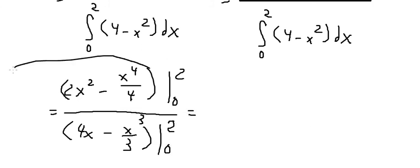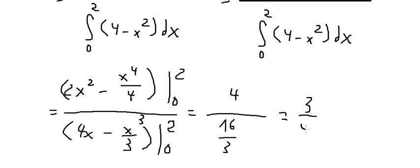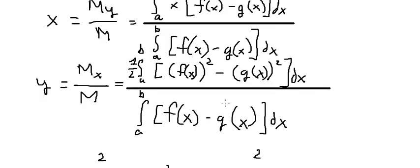Substituting x equals 2 and x equals 0, the numerator gives 4, and the denominator gives 16 over 3. So x-bar equals 4 divided by 16 over 3, which equals 3 over 4. Now let's calculate y-bar.